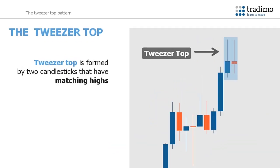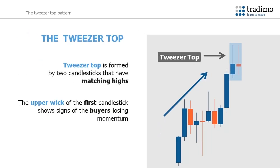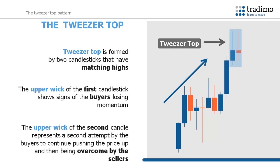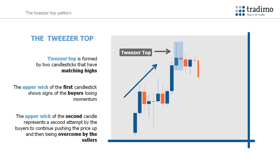Tweezer tops are formed by two candlesticks that have matching highs and can help spot a trend reversal. You can see in this example that the market is in an uptrend. The upper wick of the first candle shows signs of the buyers losing momentum. The upper wick of the second candlestick represents a second attempt by the buyers to continue pushing price up and then being overcome by the sellers. The wicks are of equal length and the highs are at the same level. These characteristics can signal the reversal of the uptrend to the downside and demonstrate how the bulls were overpowered by the bears.